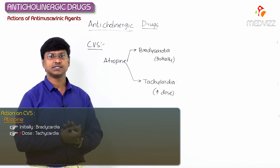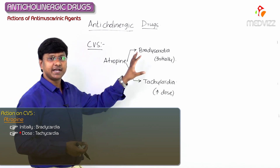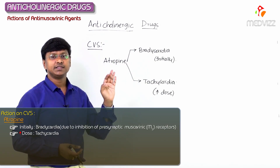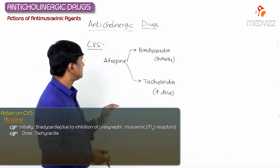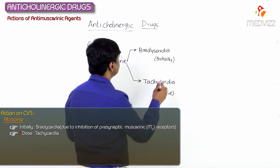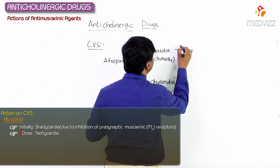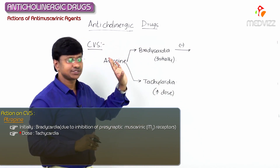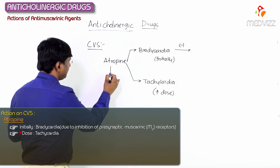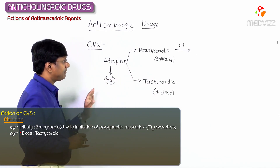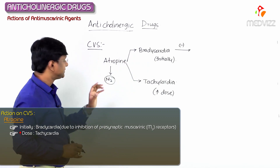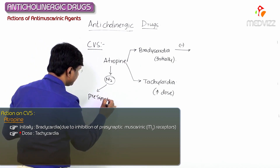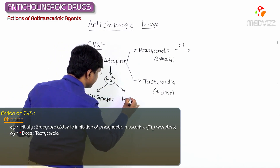Now let me tell you how atropine causes bradycardia. The bradycardia action of atropine is due to inhibition of the presynaptic muscarinic receptors. Atropine is acting mainly on the M2 receptors. For its action on the cardiovascular system, M2 receptors are present on both the presynaptic and postsynaptic nerve terminals.